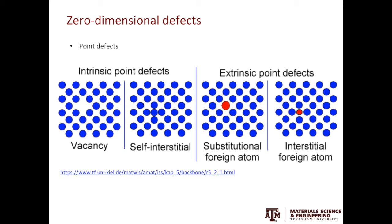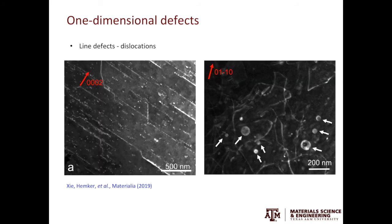Moving from zero dimension to one dimension, we have line defects, and these are dislocations. Dislocations will be the focus of this series of videos. The white lines you see in these two examples are dislocation lines, and these images were acquired using the weak beam dark field method in TEM.